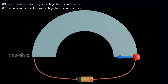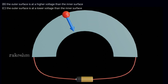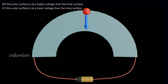The current was moving in one direction, so electrons move in the opposite direction. The arrow shown is the centripetal force on the electron so that it is able to move in a circular path. This force on the electron is due to the electric field present between the inner and outer surfaces of this strip.